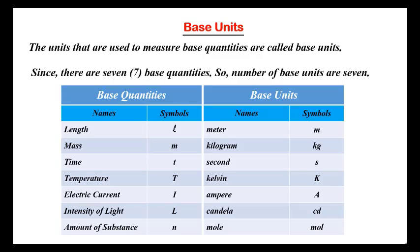The unit of electric current is Ampere, represented by capital 'A' — also derived from a scientist's name. The unit of intensity of light is candela, represented as 'cd'. The word 'candela' comes from Latin, meaning candle, just as the word 'science' comes from the Latin word 'scientia'. Since intensity of light is related to light, the unit candela — related to candle (a light source) — is used.